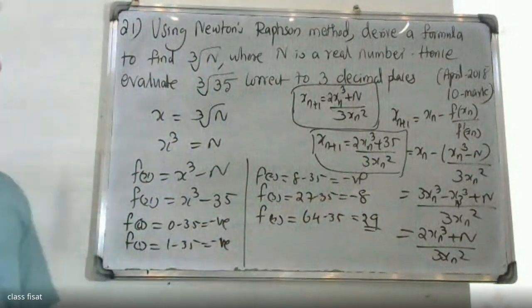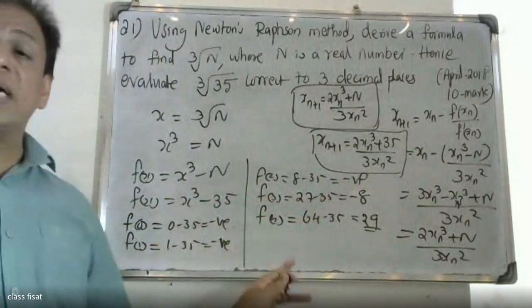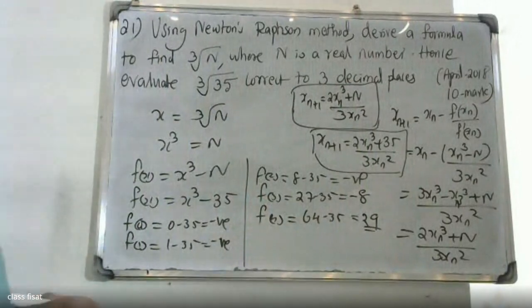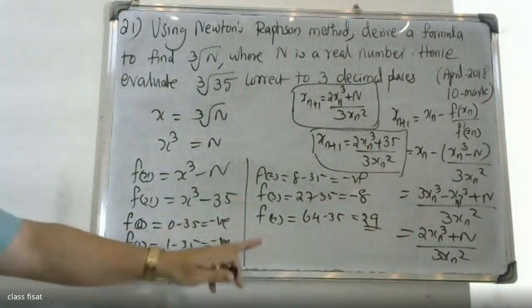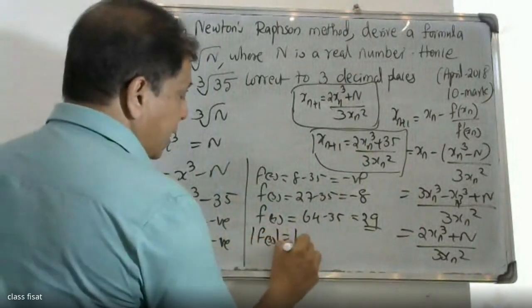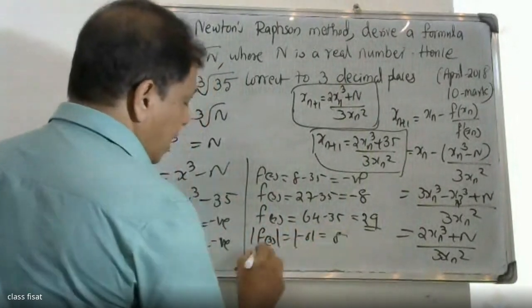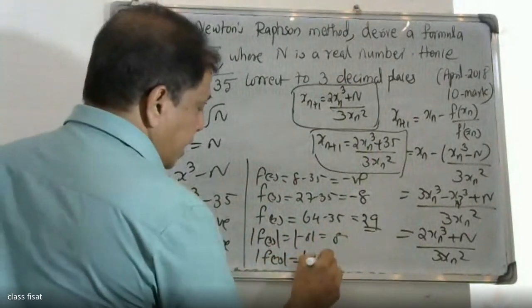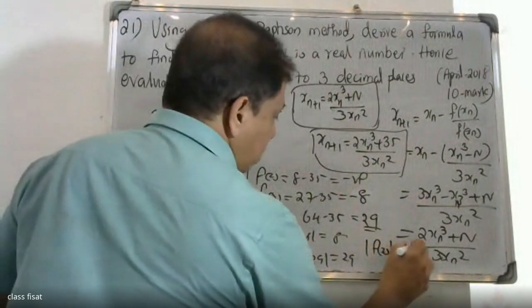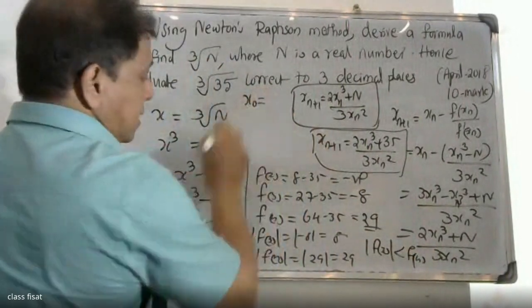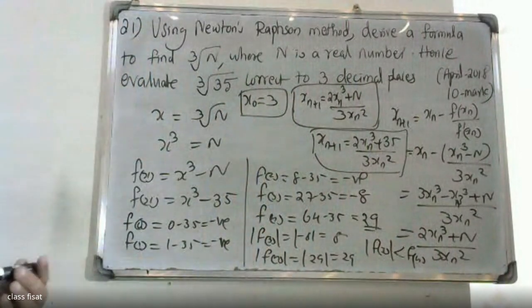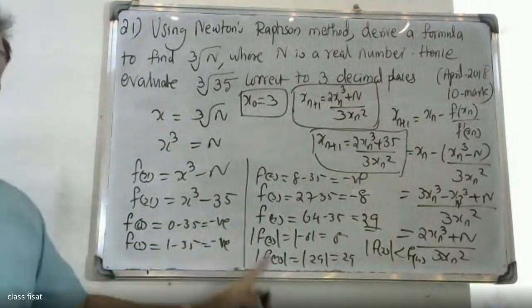Since the modulus of f(3) is less than the modulus of f(4), therefore x0 is taken as 3. The root lies between 3 and 4, so we take x naught equal to 3.